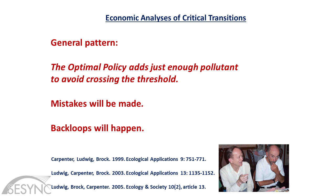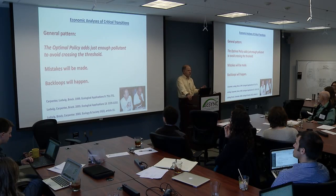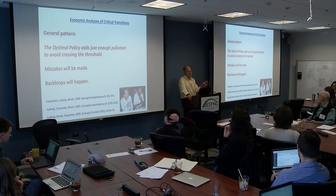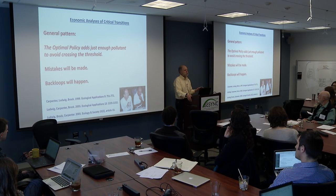So we were studying the economics of that rapid transition. Quickly summarizing three very long papers: the general pattern is that economically optimal policies in a benefit-cost sense often add just enough pollutant to barely avoid crossing the threshold. And eventually something random happens and you cross the threshold. So a lesson of the models is that mistakes are almost inevitable due to uncertainties and random events in the environment.